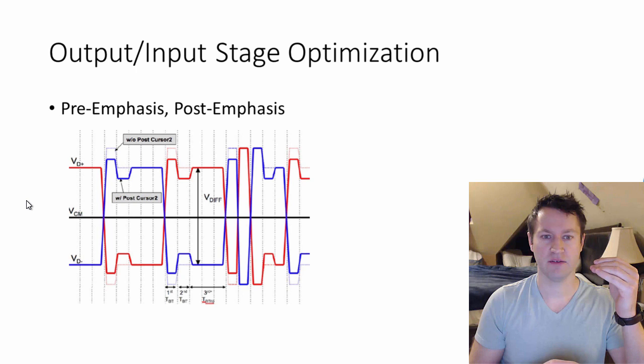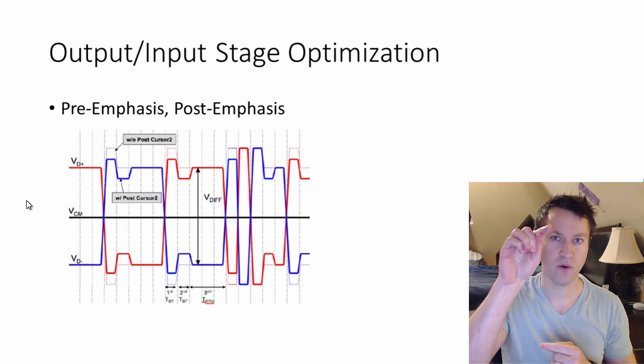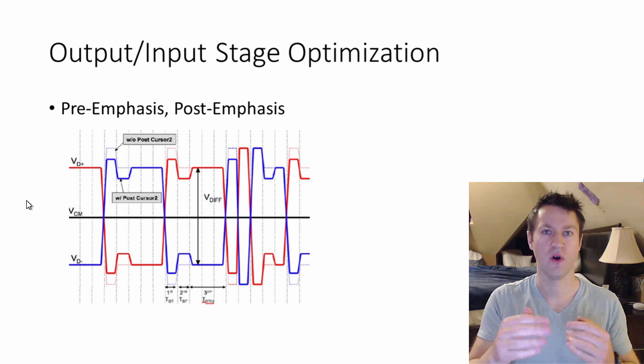You can get there faster if you over-bias, if you overdrive the line for a small amount of time. That's what pre-emphasis is really doing. You're overdriving your line and then coming back down again to kind of charge it up, get that data to push through and really transition as quickly as possible. Change states super fast.